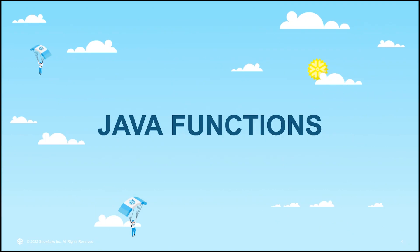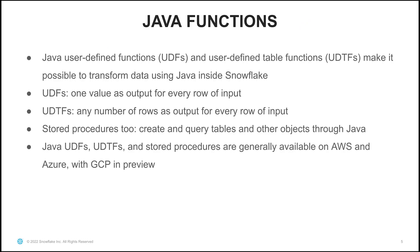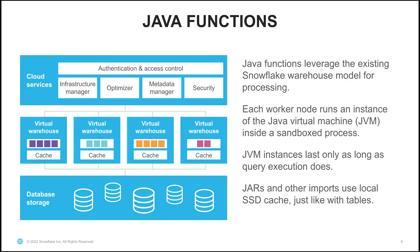When you use Java functions in Snowflake, you have a choice of using either UDFs or UDTFs. Both make it possible to transform data using Java right inside of Snowflake. When you use a UDF, you're returning one value as output for every row of input. With a UDTF, you're returning any number of rows as output for every row of input. We also support Java stored procedures, so you can create and query tables and other objects using Java and bring your Java-based workloads into Snowflake. Java UDFs, UDTFs, and stored procedures are generally available on AWS and Azure and are in preview on GCP. What's exciting is that they leverage the existing Snowflake warehouse model — there's no additional cost to run Java code beyond the compute credits you pay for normal queries.